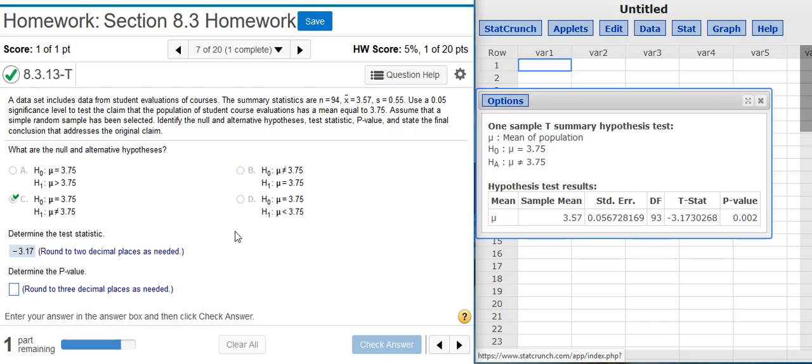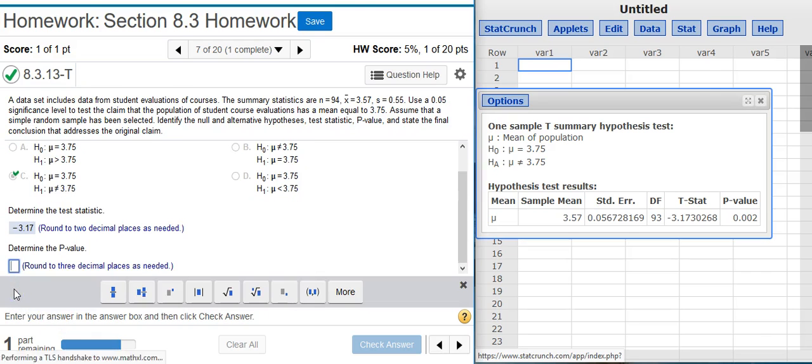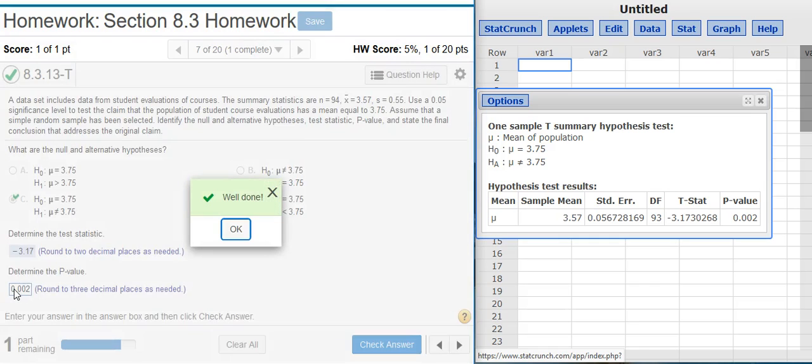The third part of our problem asks us to determine the p-value. Again, I go to my results window, and in that table, the p-value is always the last value listed in that table. Well done!